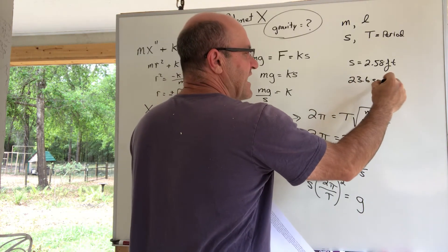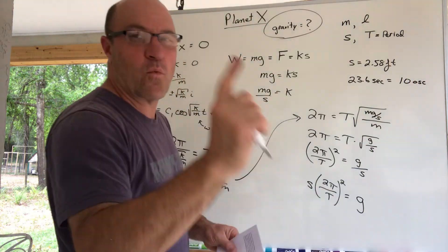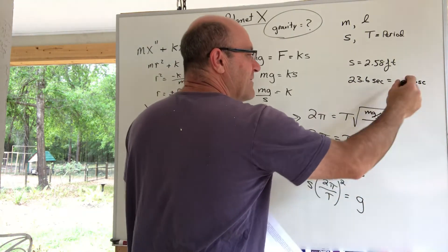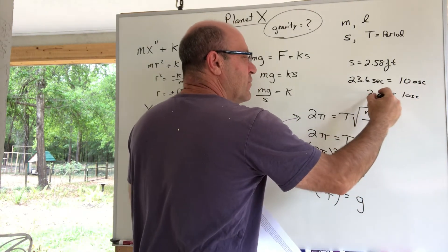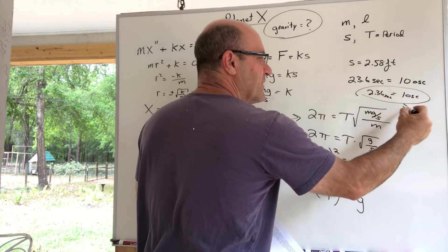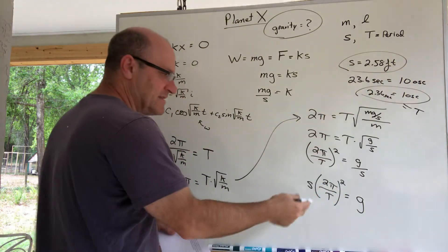And then it said I pulled the mass down 0.55 feet, but I don't need that either. It says after that it takes 23.6 seconds for 10 oscillations. If it takes 23.6 seconds for 10 oscillations, what does it take for one oscillation? Because that's the period.